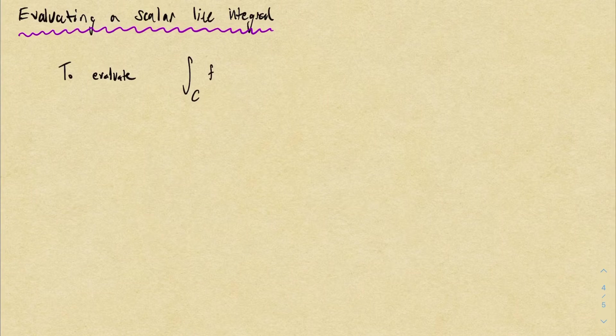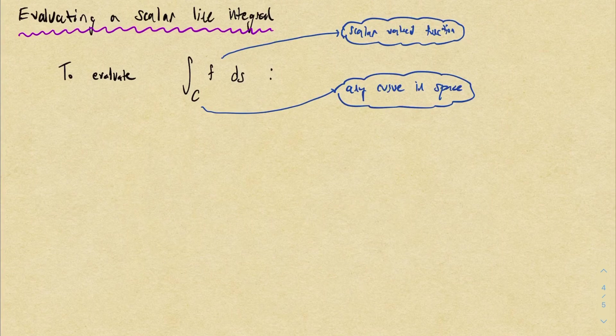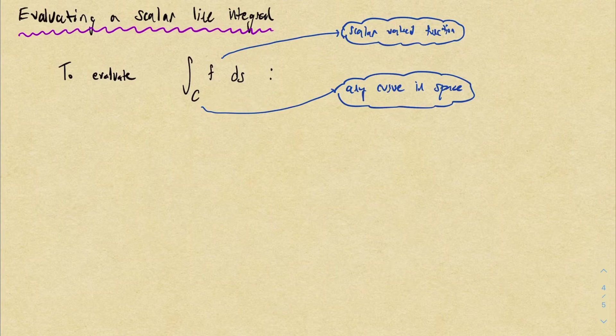Briefly, we're given a line integral where the thing we're integrating over is some curve C, and the thing we're integrating is a scalar valued function. The differential DS represents a small chunk of the curve C. When we compute one of these things, we're just taking a weighted sum of the curve where the weight for each chunk is determined by the scalar function F.